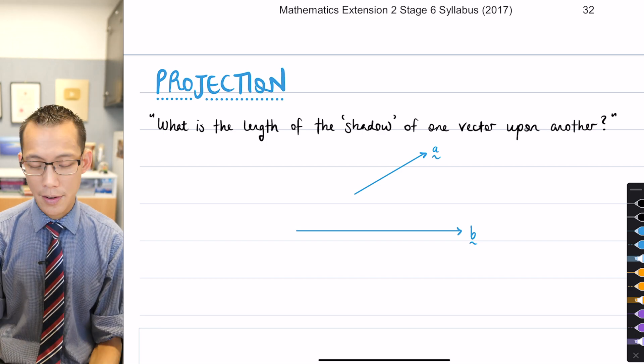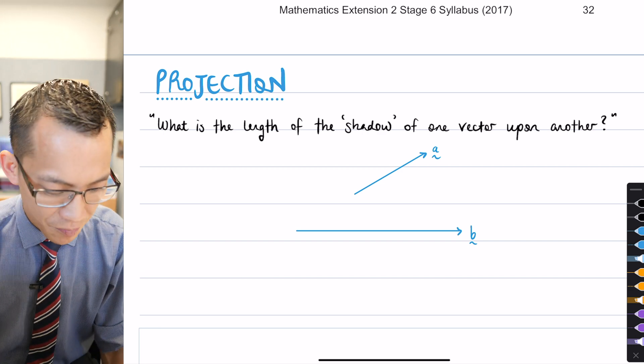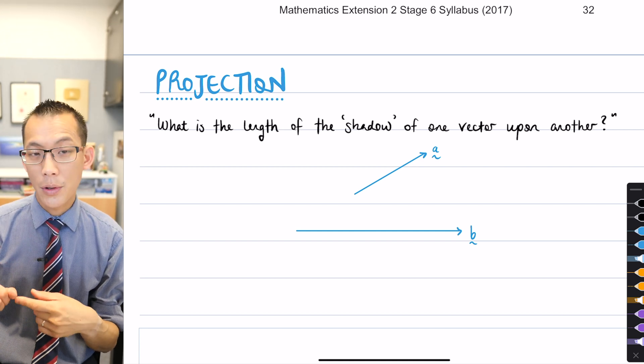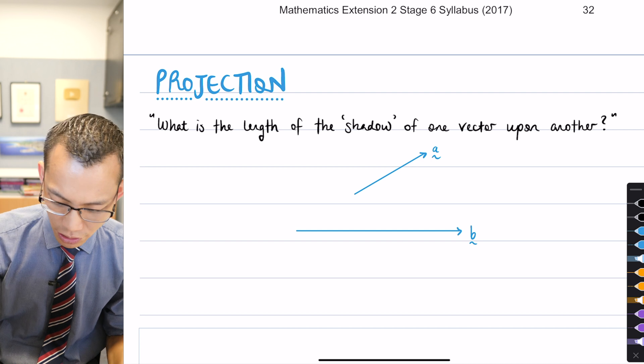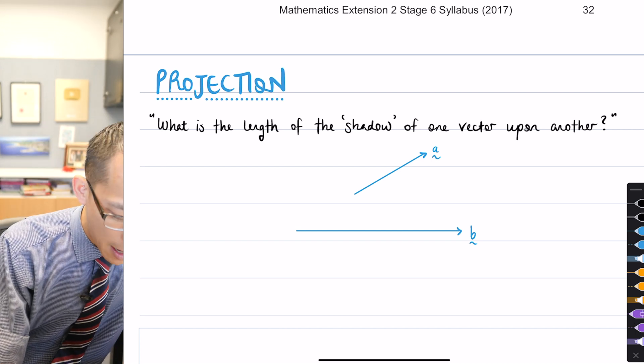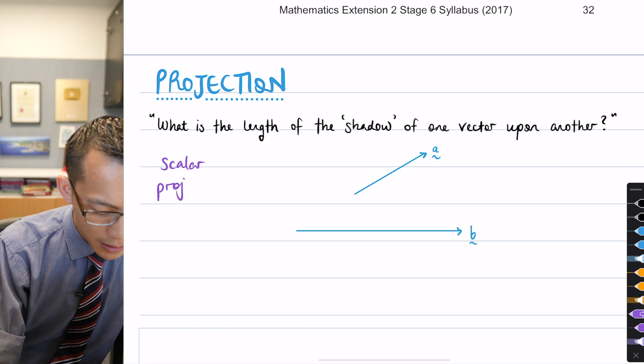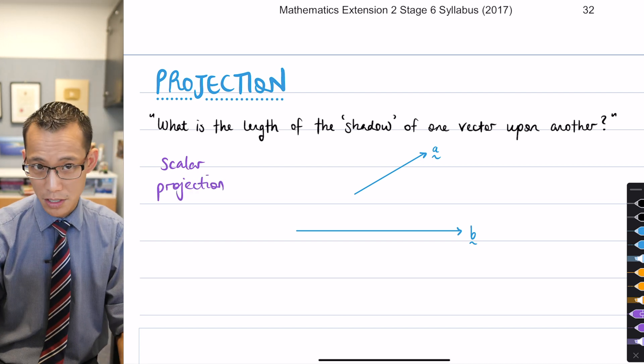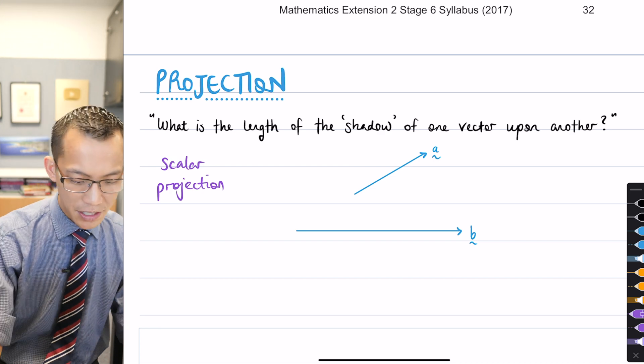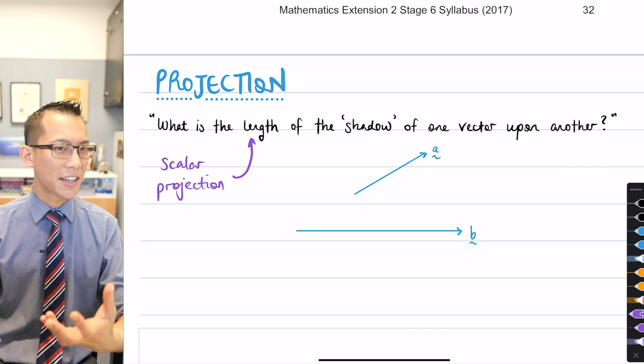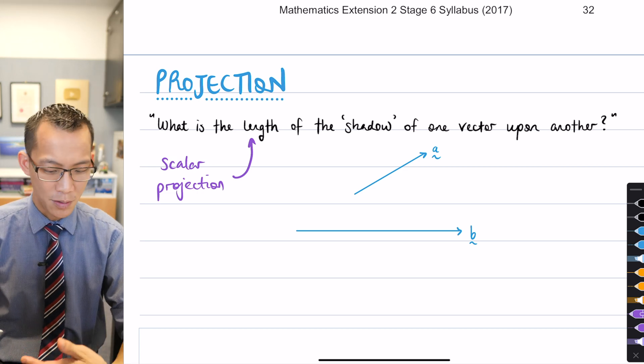The way this was explained to me the very first time is this sentence I've written here, right? When you are projecting, the first thing you do is you work out what we call the scalar projection. I should actually just jot that down for you. The scalar projection, and like all scalars, it's a one-dimensional quantity and that one dimensional quantity is the length of the shadow that one vector casts upon another, as it were.